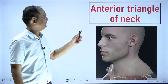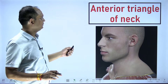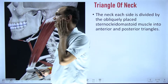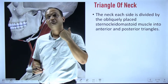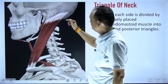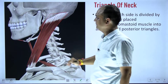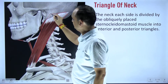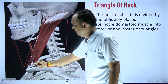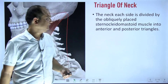Hello students, today we'll discuss the anterior triangle of the neck. When you look at the side of the neck, it is divided into two parts by a big oblique muscle known as the sternocleidomastoid. This muscle divides the side of the neck into two parts: the anterior area, which is the anterior triangle, and the posterior triangle.